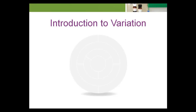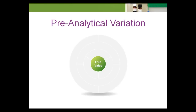Variation in a test result is expected. Because of factors before and during testing, we can never know the true value of an analyte. Controlling variation is critical to ensuring every result reported is as close to the true value as possible. Too much variation can result in the reporting of erroneous patient test results, leading to misdiagnosis, an incorrect prognosis, or an inappropriate treatment plan for the patient. Frequent reporting of erroneous results by a laboratory will seriously diminish its credibility and may result in liability.